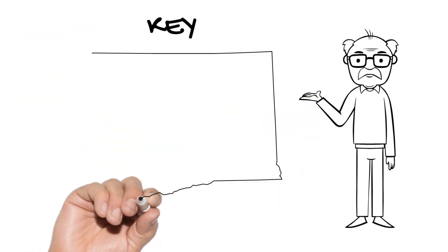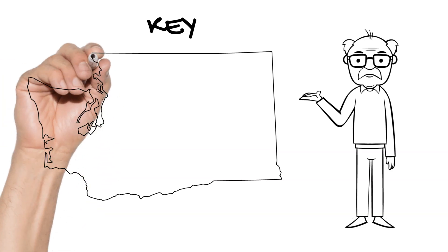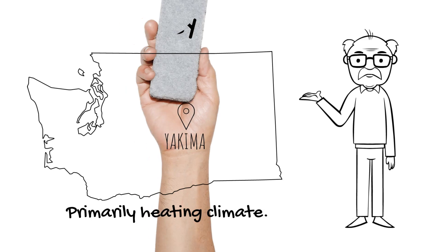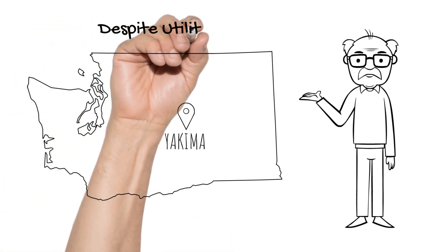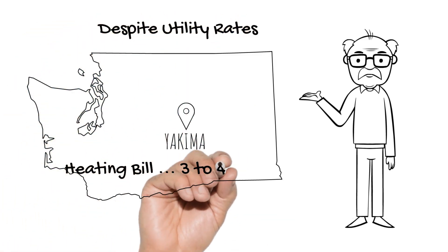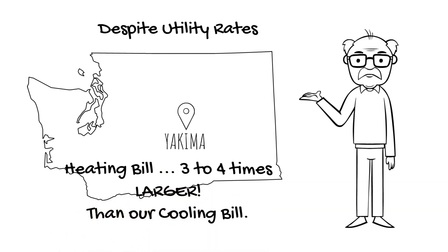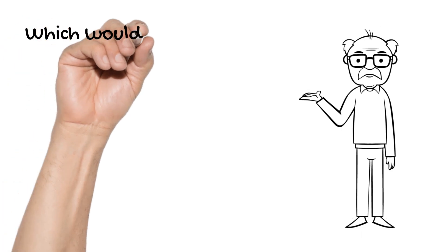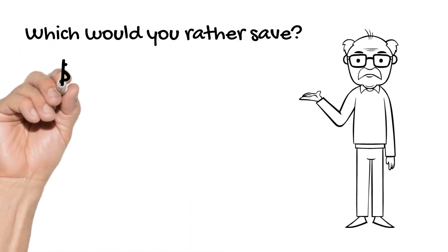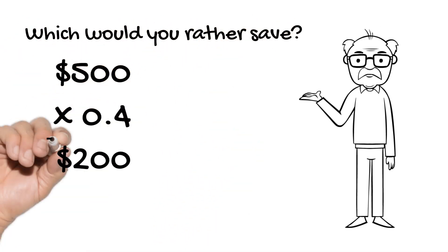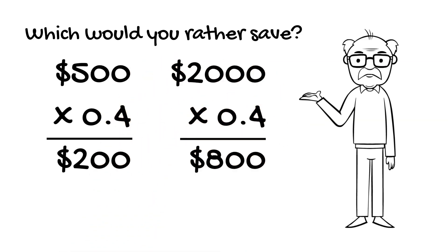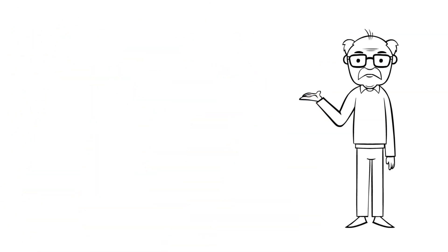A key to keep in mind for us in the Yakima area is we live in a primarily heating climate. Despite low utility rates, our heating bill is typically three to four times larger than our cooling bill. So, what would you like to save more of? 40% off a $500 bill or 40% off a $2,000 bill?